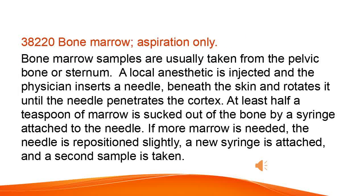Bone Marrow Aspiration only. Bone marrow samples are usually taken from the pelvic bone or sternum. A local anesthetic is injected and the physician inserts a needle beneath the skin and rotates it until the needle penetrates the cortex. At least half a teaspoon of marrow is sucked out of the bone by a syringe attached to the needle. If more marrow is needed, the needle is repositioned slightly, a new syringe is attached, and a second sample is taken.